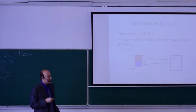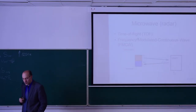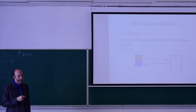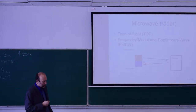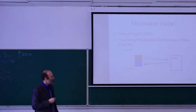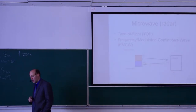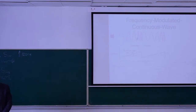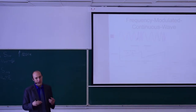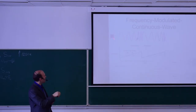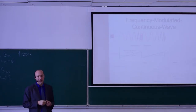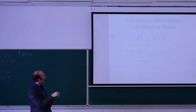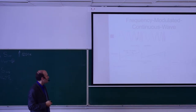If you want to measure shorter distances, you need to measure very short periods of time, which is quite difficult. For this reason, instead of measuring time, we look for a frequency difference. This is the principle of the second method: frequency modulated continuous wave. The principle is that you send a continuous signal and vary its frequency.